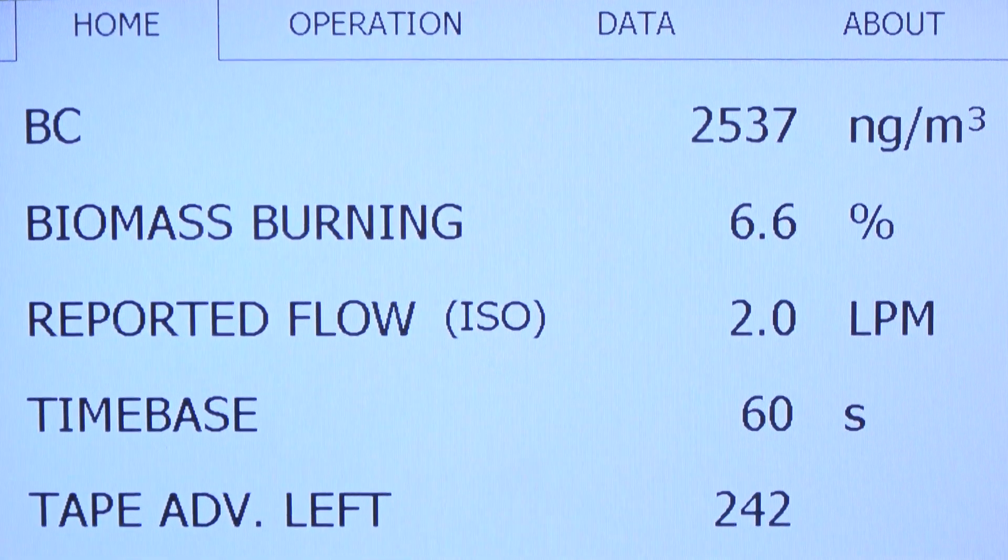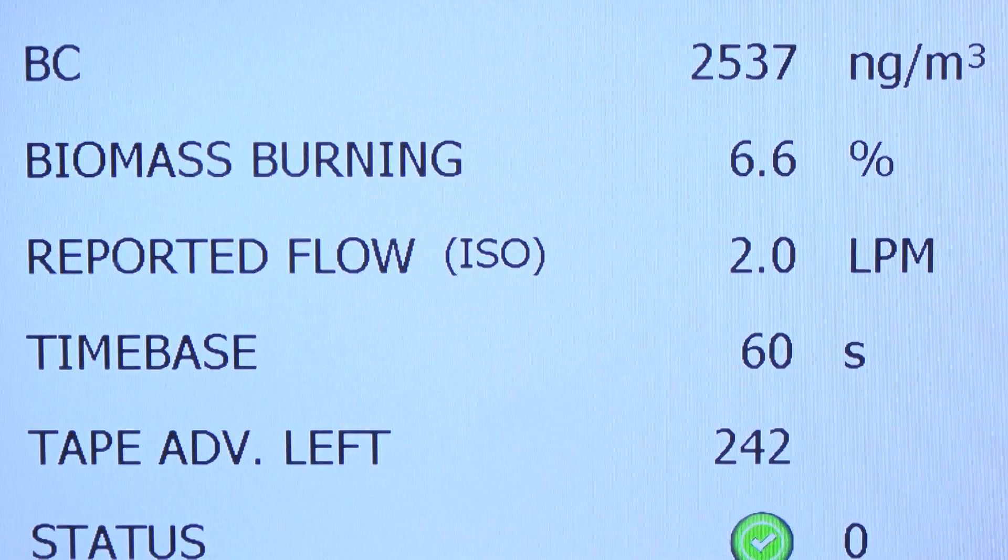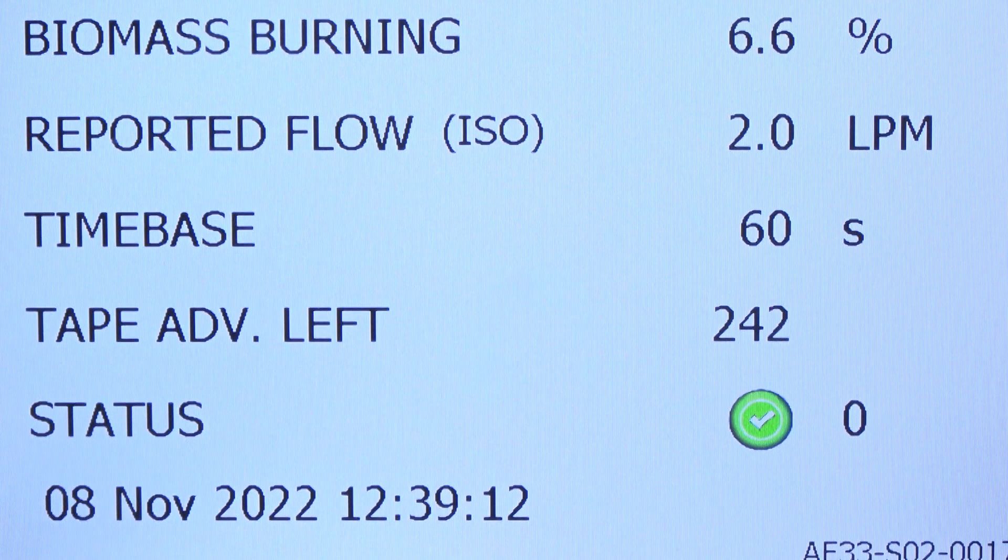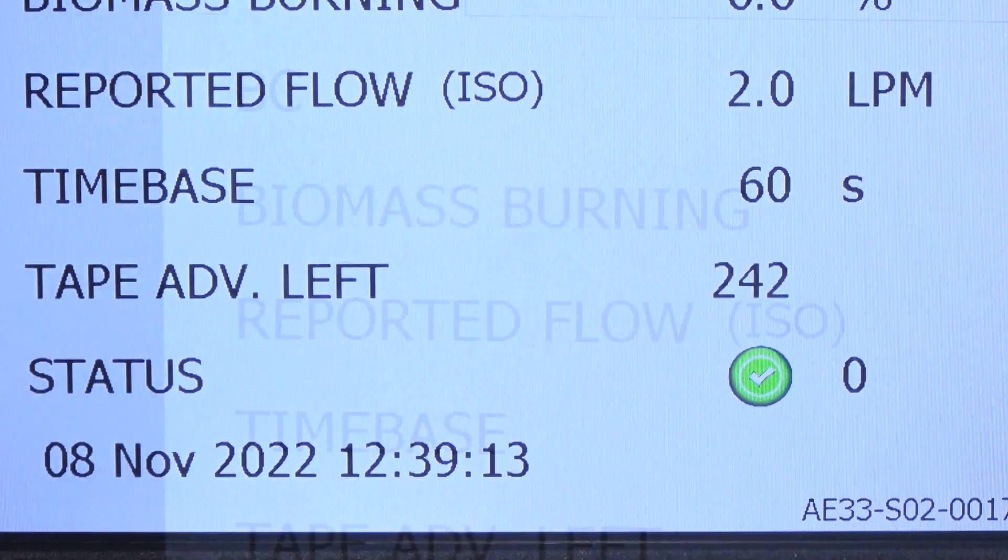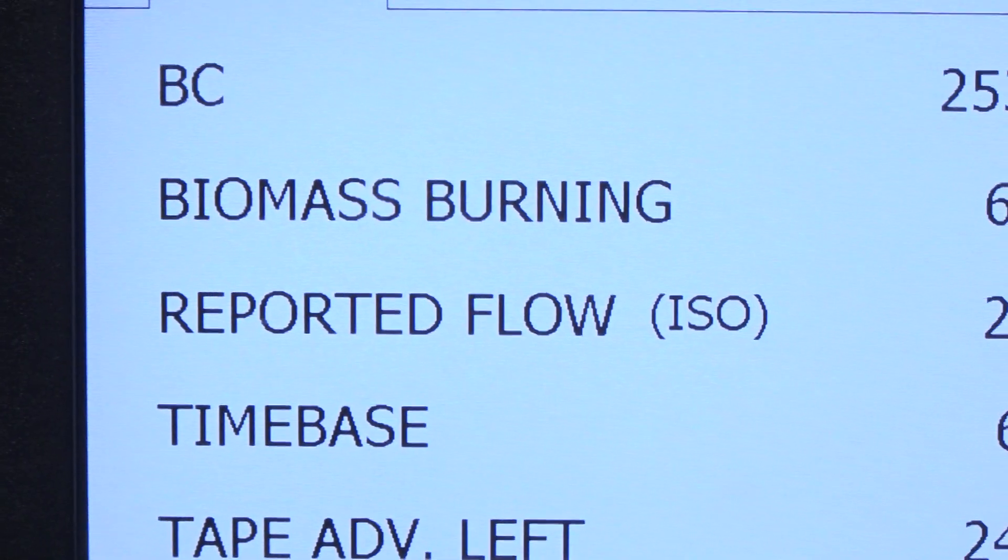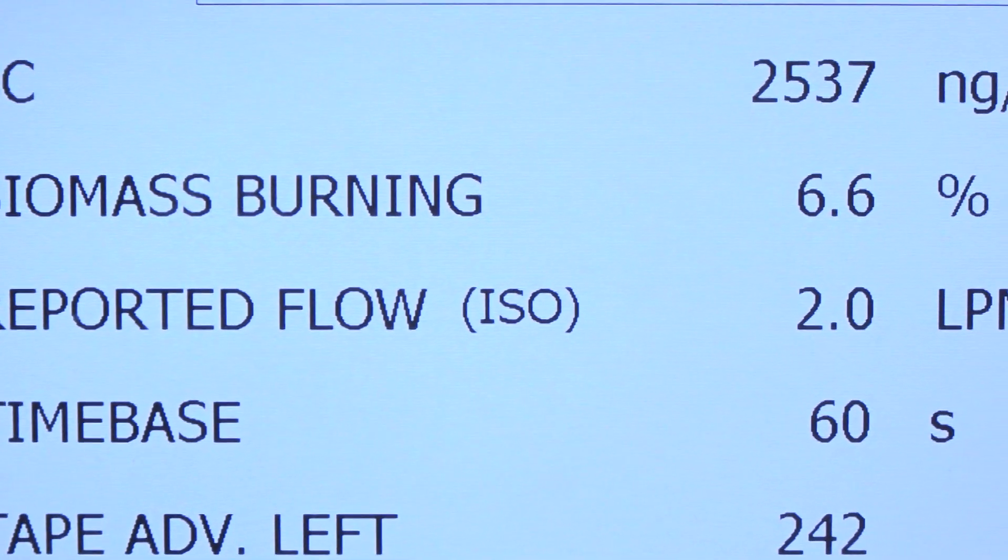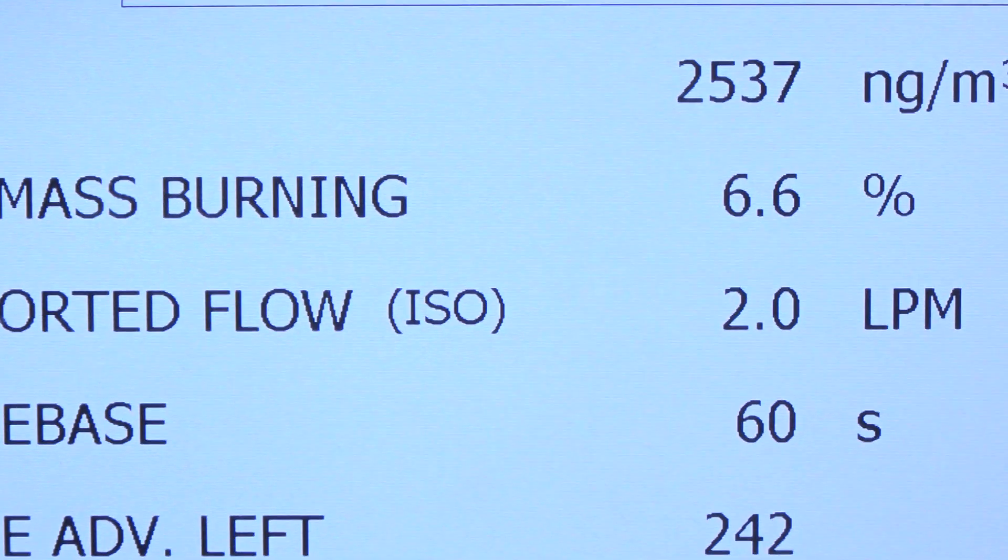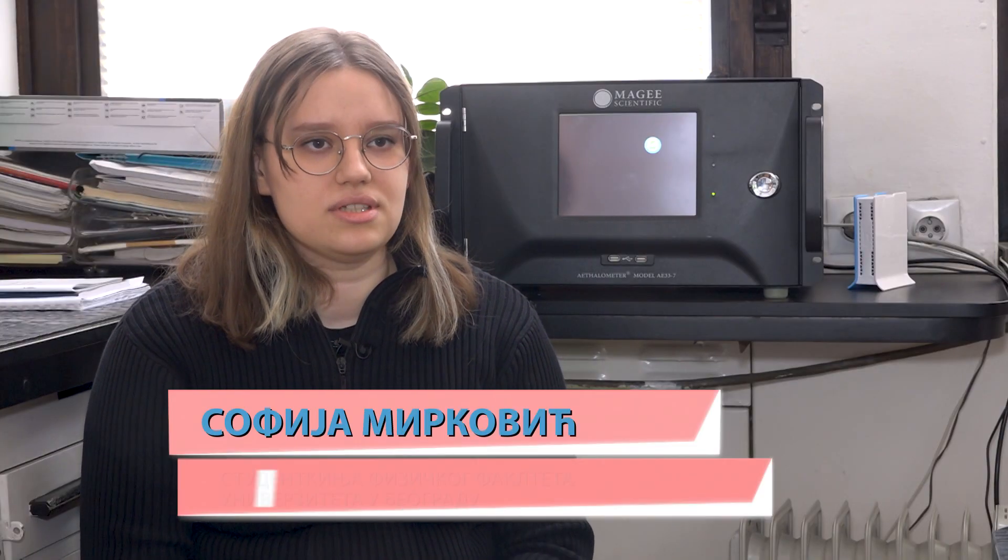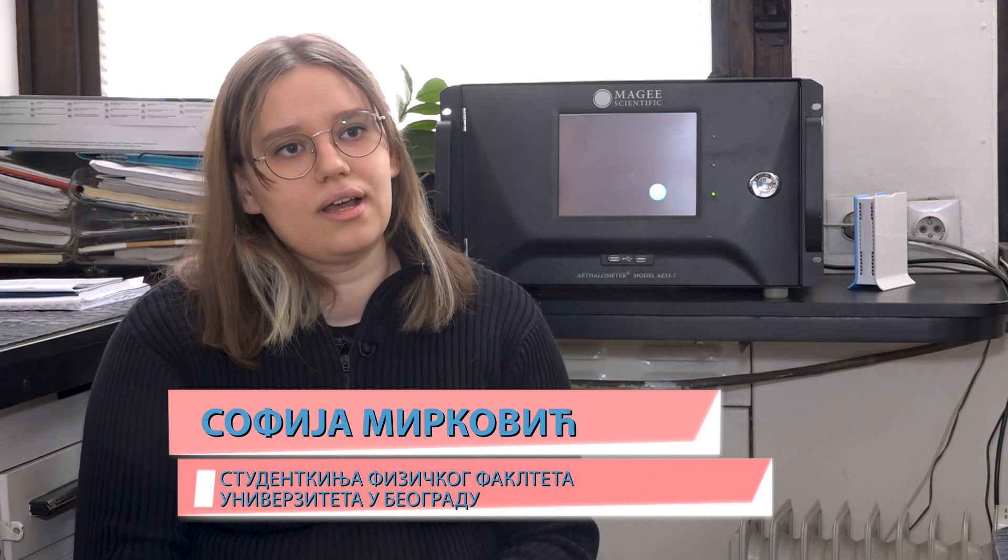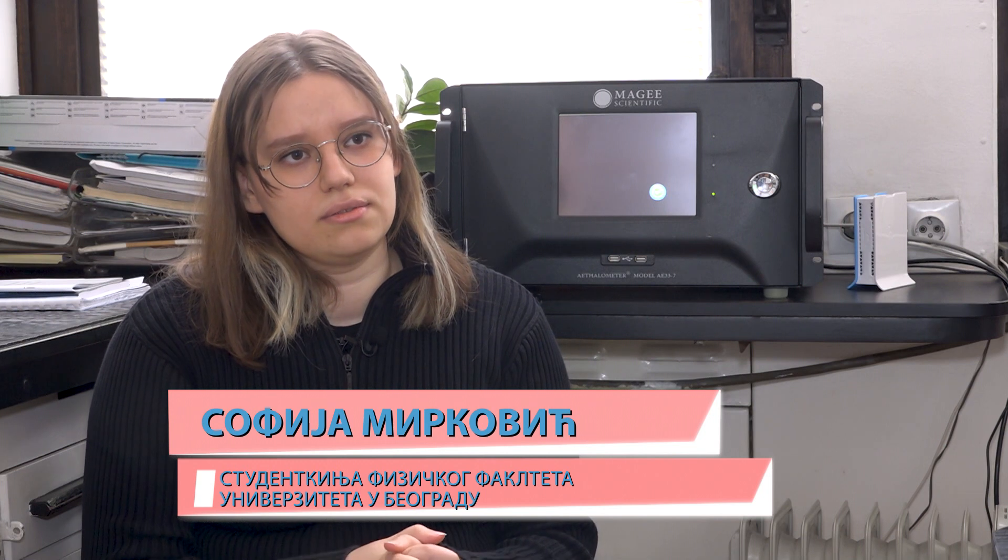Ovaj uređaj radi na principu spektroskopije. Mi zapravo možemo da razlikujemo dve talasne dužine. Jedna je vezana za sagorevanje biomase, dok je druga vezana za sagorevanje fosilnih goriva i mi možemo da razlikujemo doprinose različitih sagorevanja u našem vazduhu. Mi black carbon koji detektujemo od fosilnih goriva može da dolazi od sagorevanja uglja, sagorevanja fosilnih goriva, dizela itd.